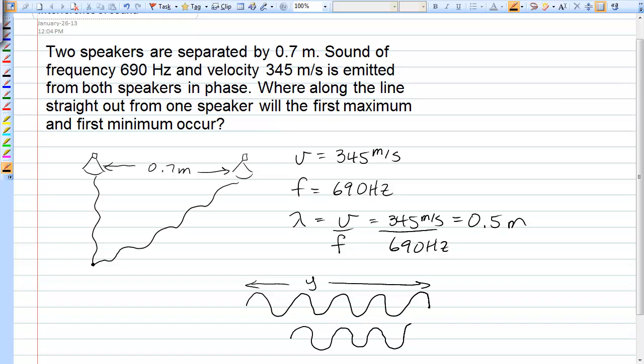In order for them to interfere constructively, that means that their peaks line up. Now, the difference, let's call this distance X,